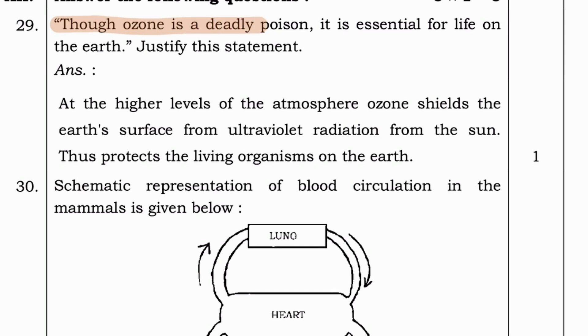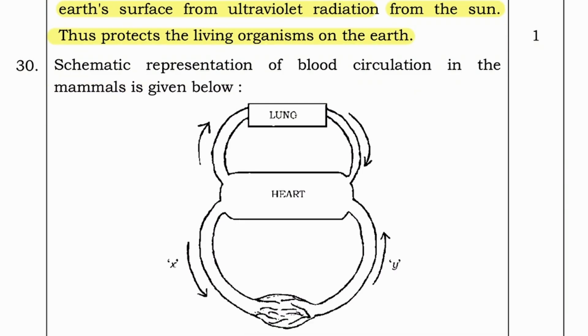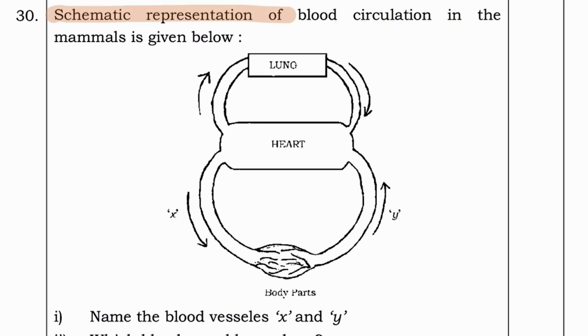Next question. Though ozone is a deadly poison, it is essential for life on earth. Justify this statement. Answer. At higher levels of atmosphere, ozone shields the earth's surface from ultraviolet radiation from the sun. Thus protects the living organisms on earth.